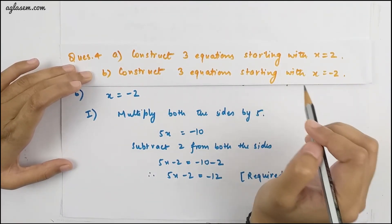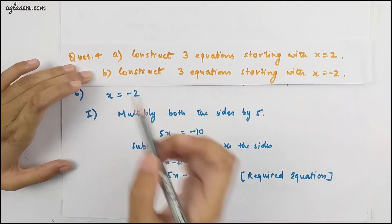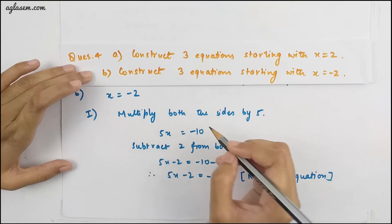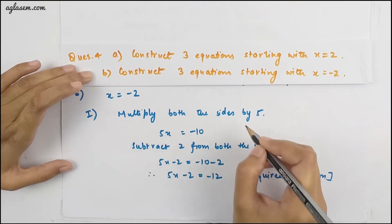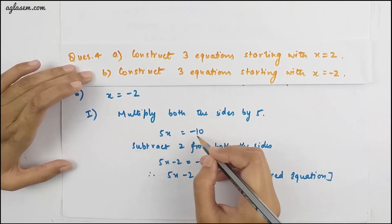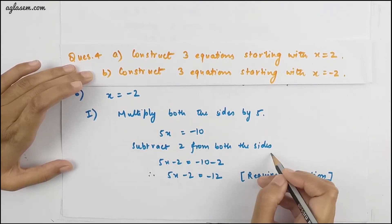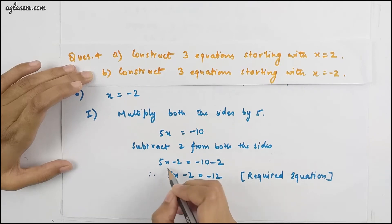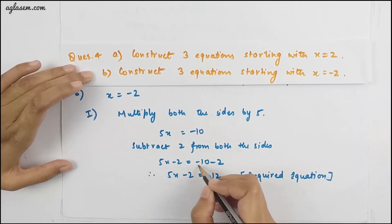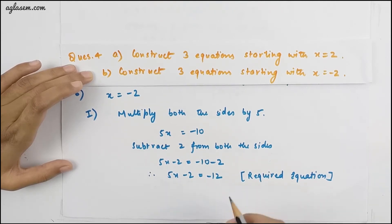In the B part, construct three equations starting with x = −2. First equation: multiply both sides by 5, giving 5x = −10. Subtract 2 from both sides: 5x − 2 = −10 − 2. Therefore the equation 5x − 2 = −12 is formed.